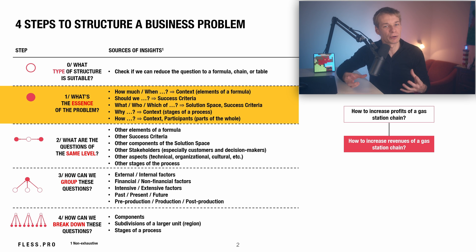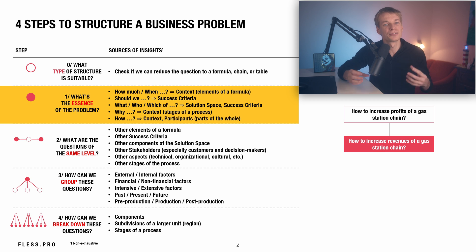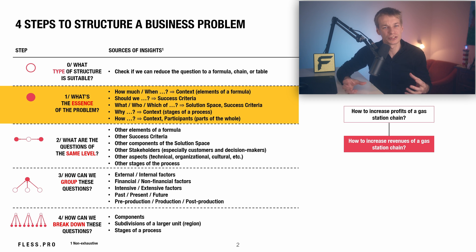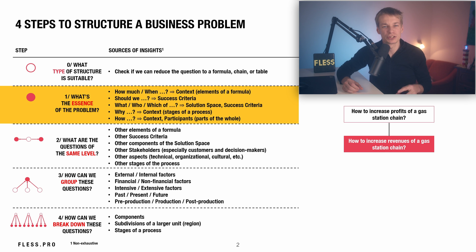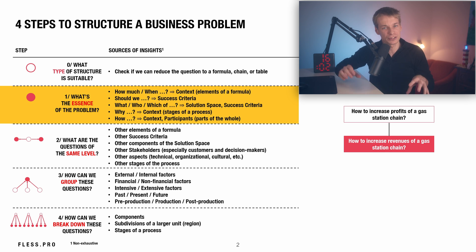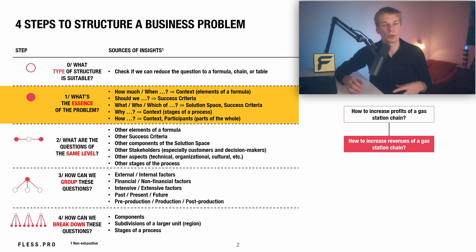Typically, you'd have a preliminary understanding of critical analysis areas. If uncertain, consider these prompts: if your main question is 'how much' or 'when,' consider the context and find elements or a formula. If the main question is 'should we do something,' then look into success criteria. If the question is 'what,' 'who,' or 'which of,' consider the solution space and success criteria, and build a table based on them.